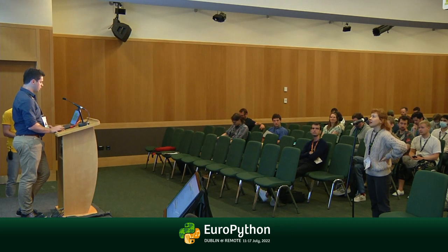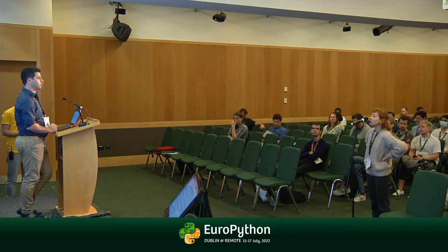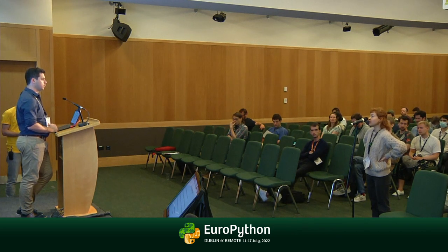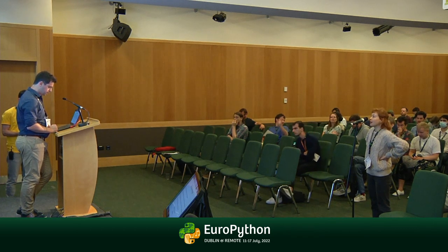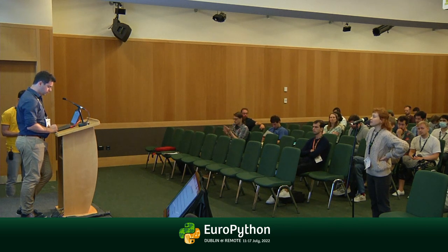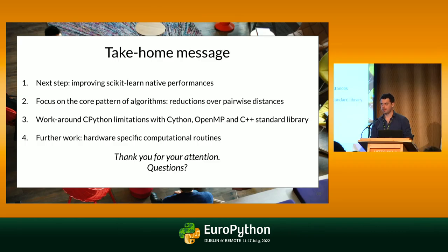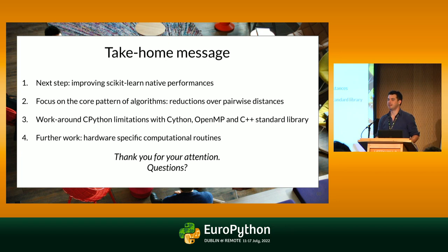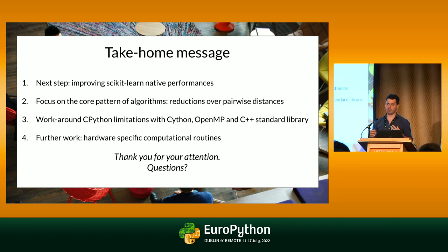Follow-up question: When using custom non-Euclidean distance matrices, the user ran into RAM issues with many algorithms. Are you working on that? There are patterns in scikit-learn that can be improved — for instance agglomerative clustering computes a full dissimilarity matrix, causing memory crashes for large datasets. If you have this specific problem, let's discuss it after the talk — I'm happy to look into it.